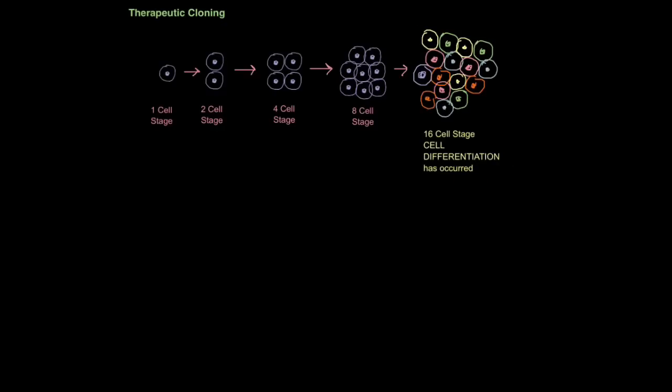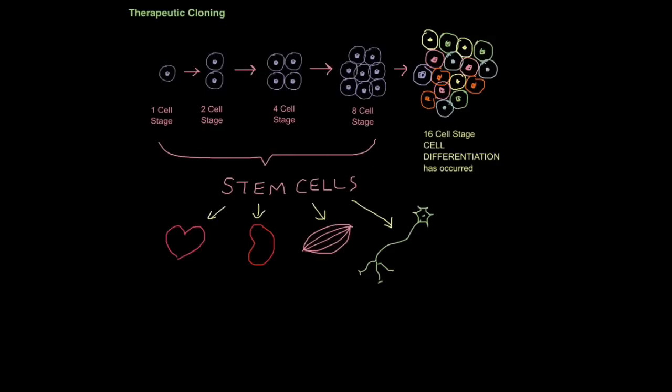So suddenly these cells now become specific. They have specific jobs. So we may have a muscle cell here or a nerve cell here, for example. We cannot use these cells for therapeutic cloning. The whole point is we have to get stem cells, which can become any other type of cell. So these cells are called stem cells and they can become, given the right conditions, any other type of cell, heart cells, kidney cells, muscle cells, nerve cells, for example.